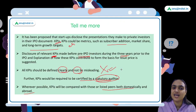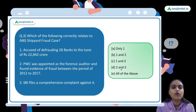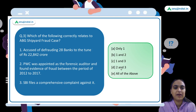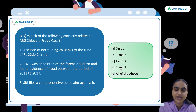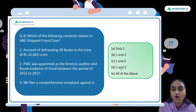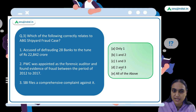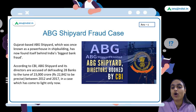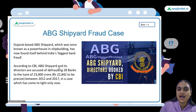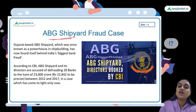Moving to the last topic and question of the day: which of the following correctly relates to the ABG Shipyard fraud case? This fraud case has been continuously appearing in newspapers. It is considered one of the biggest bank frauds in India. ABG Shipyard is an Indian firm — a Gujarat-based ship-building firm.